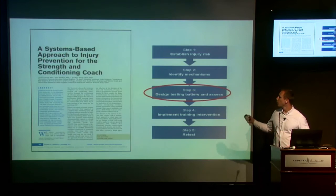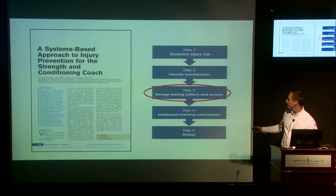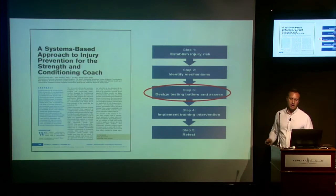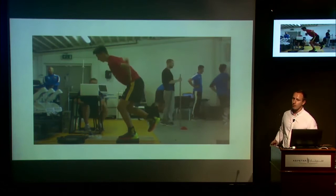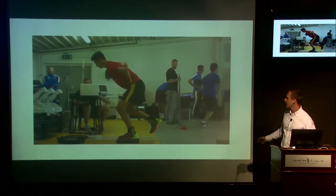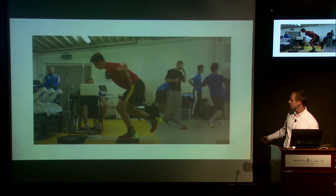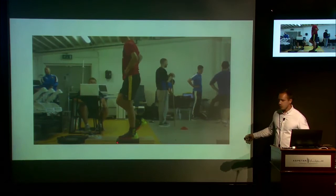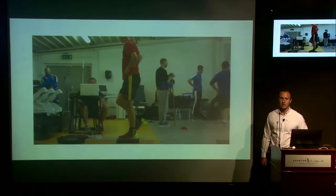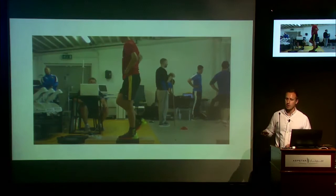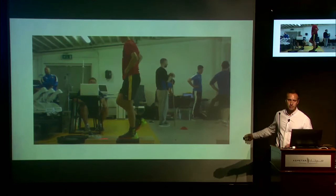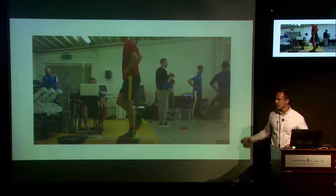Now let's look at the design of the test battery. One test we used was a maximal single leg hop for distance: the athlete hops as far as they can on one leg. We then took 75% of their maximum hop distance and asked them to hop onto a force platform. On force platforms — these are actually available now for around 500 pounds — sampling at 1,000 hertz, which is where we need to be for this kind of testing. This is actually a very practical tool.